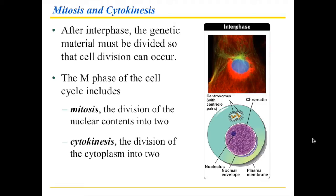The M phase — this phase of the cell cycle where the cell actually divides — has two components: mitosis and cytokinesis.